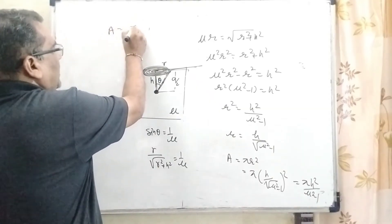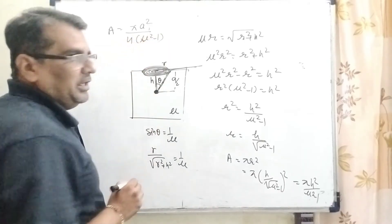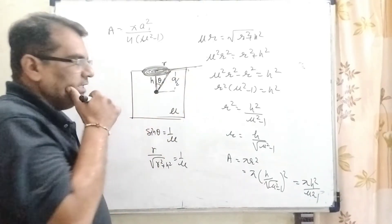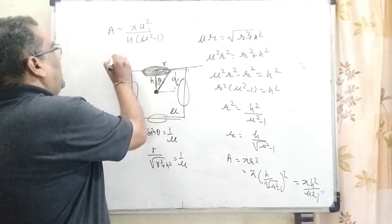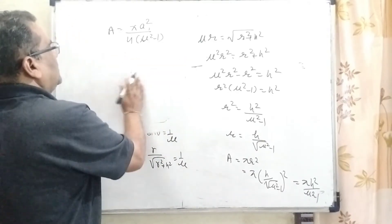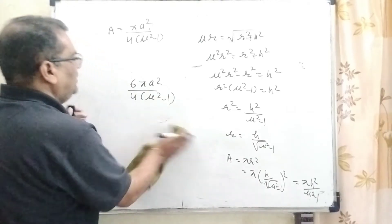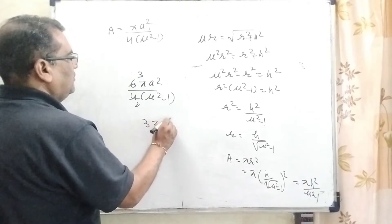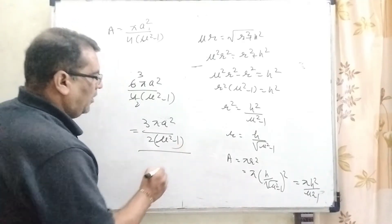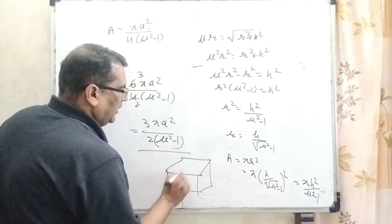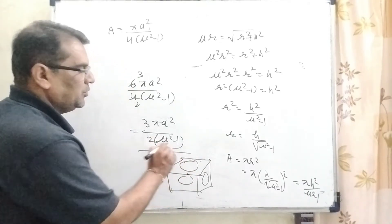The area where the rays graze is π r² = π × [h/√(μ²−1)]² = πh²/(μ²−1). Substituting h = a/2: area = πa²/[4(μ²−1)]. Since the cube has 6 faces, we must cover 6 such circular areas: total area = 6πa²/[4(μ²−1)] = 3πa²/[2(μ²−1)]. So the answer is option (a). Only circular parts of the 6 faces need to be covered for the point source to not be seen. I hope you understood this question.